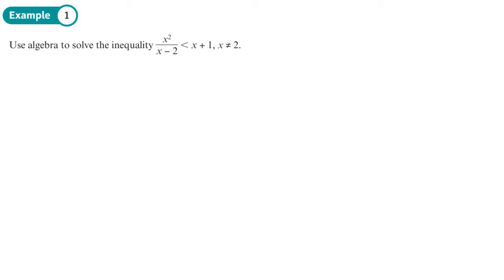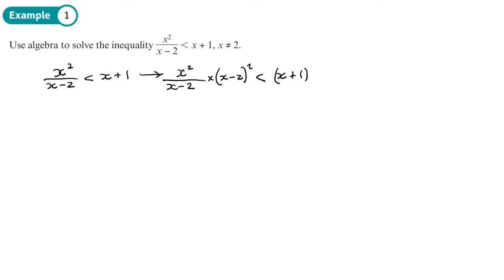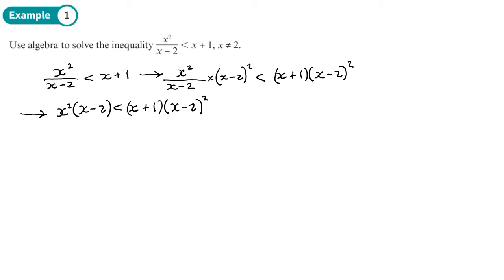So the question says use algebra to solve the inequality. Step one is multiplying both sides by the denominator squared. We get x times (x minus 2) squared on the left, less than (x minus 1) times (x minus 2) squared on the right. One factor of (x minus 2) cancels on the left giving x(x minus 2), which is less than (x plus 1)(x minus 2) squared. Then we bring everything to one side so we have something less than zero.